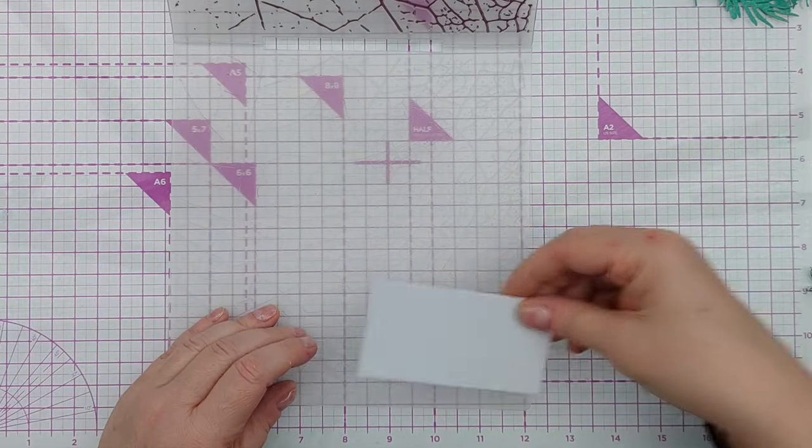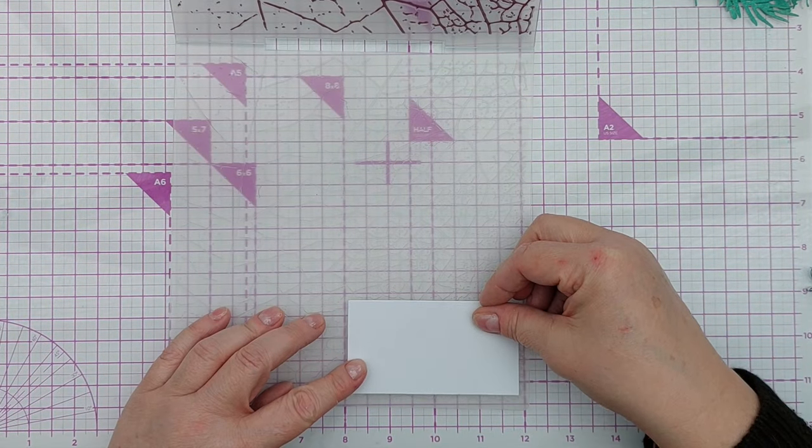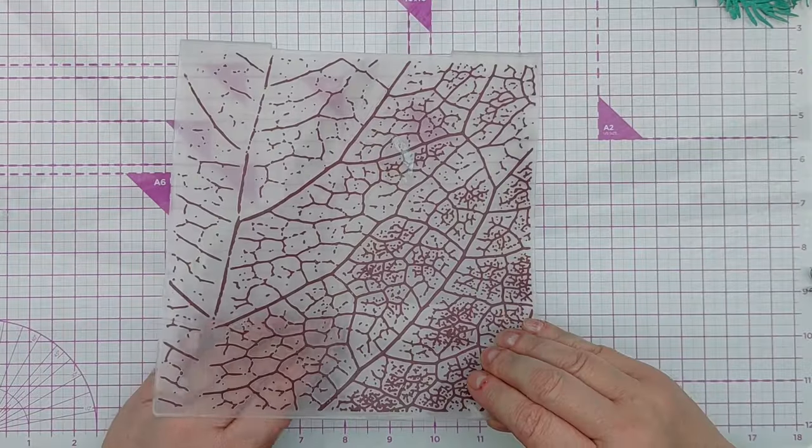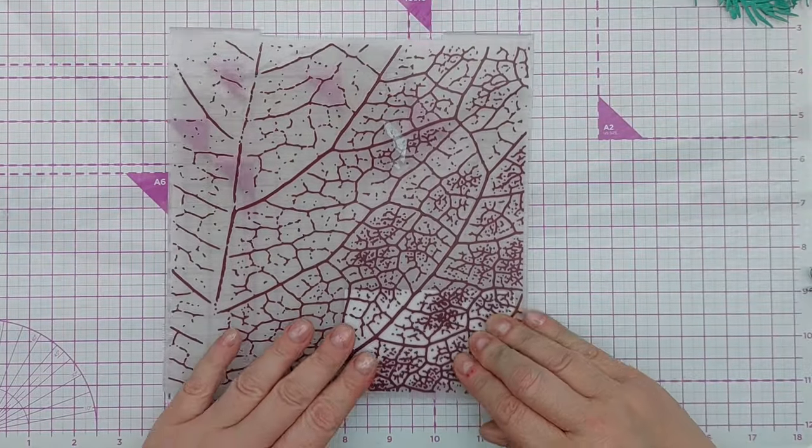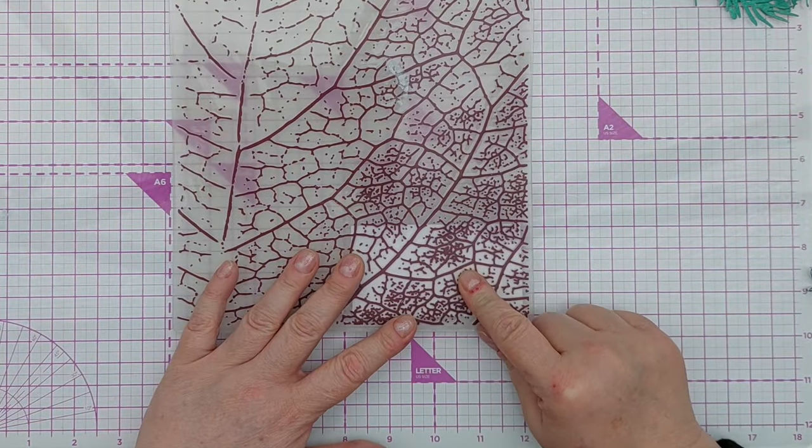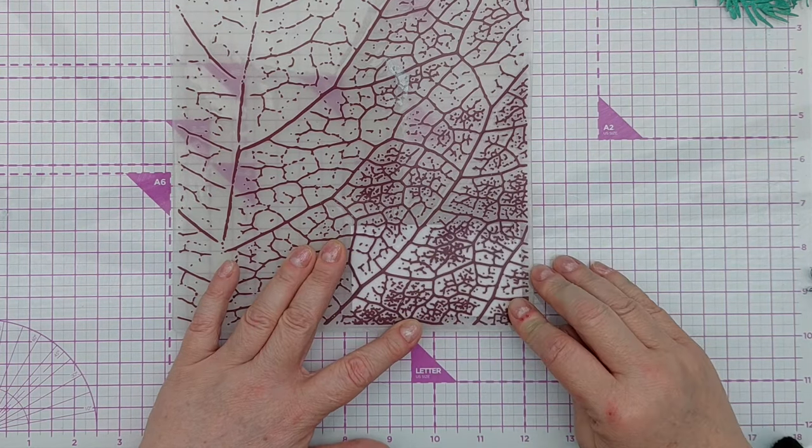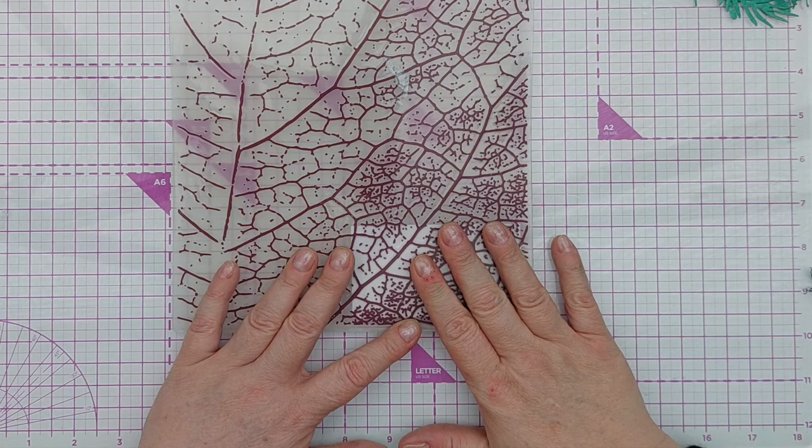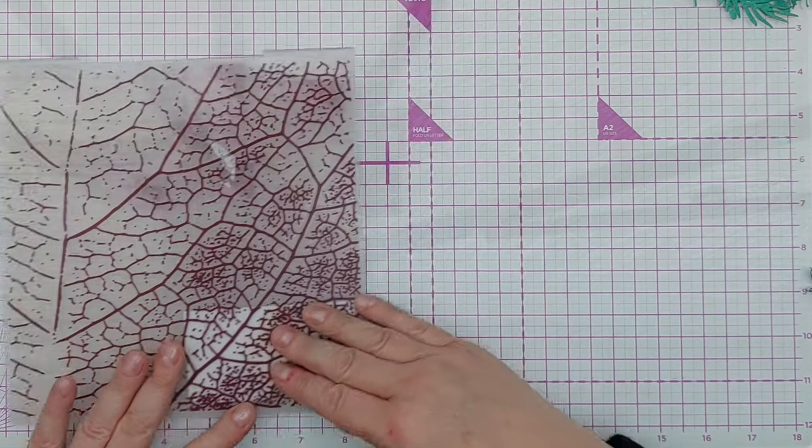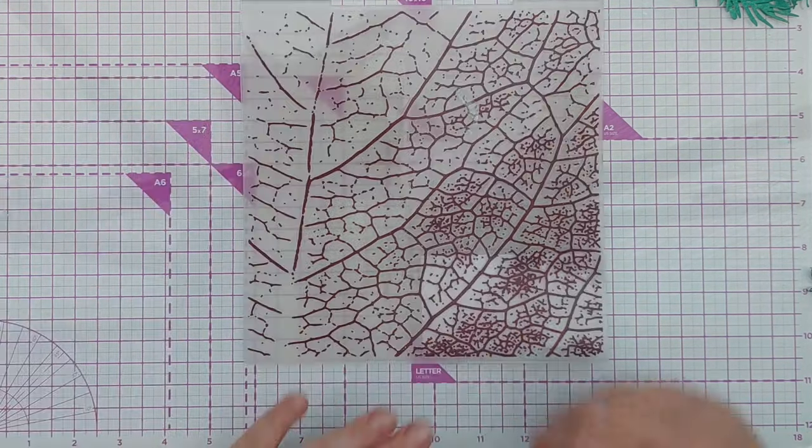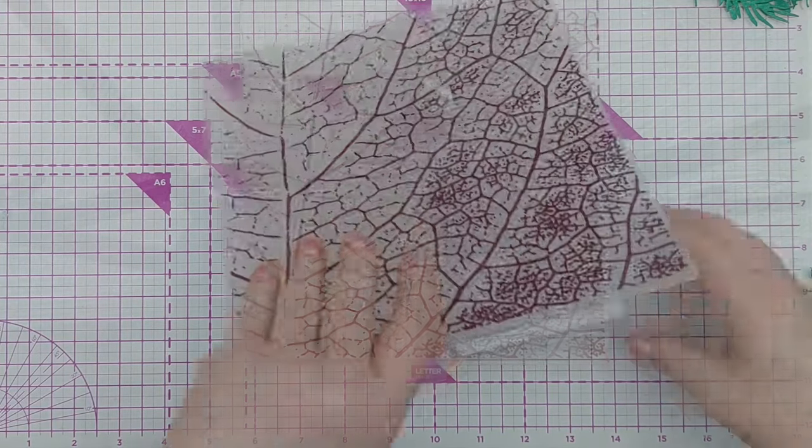I want to pop it about there because that's where the densest pattern is. And I'm going to have to run this through my Gemini electronic die cutting machine because it won't fit through a cuttlebug. It is 8 inches by 8 inches. And there we go.